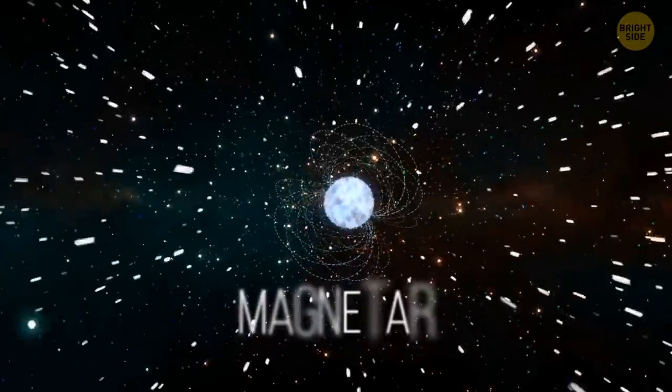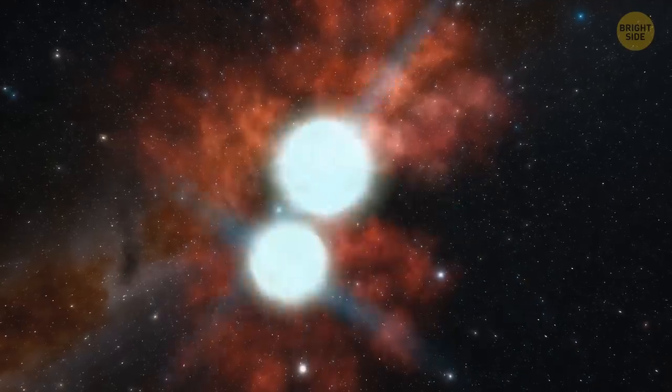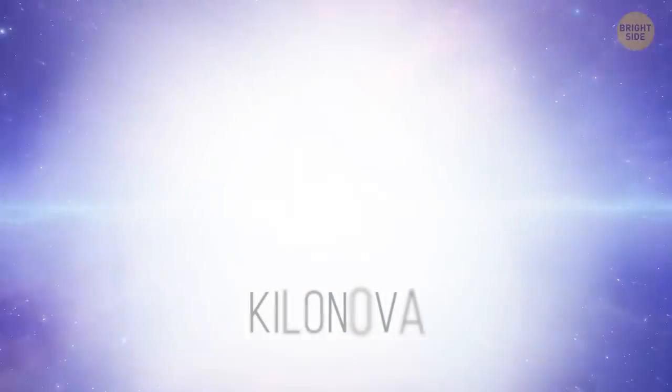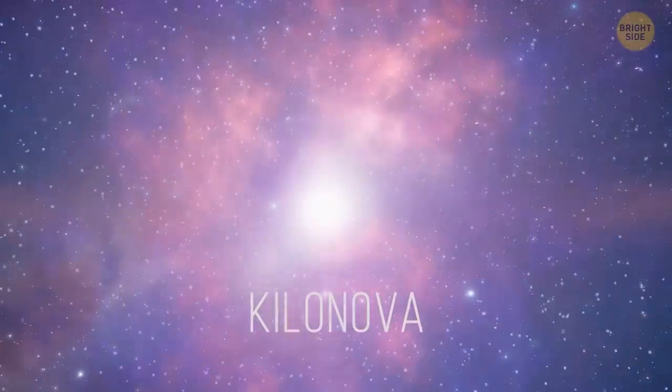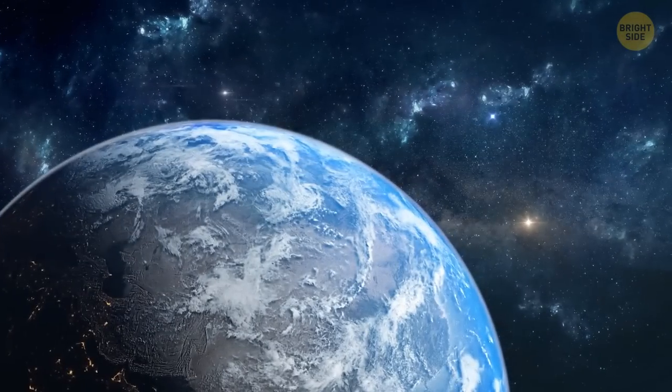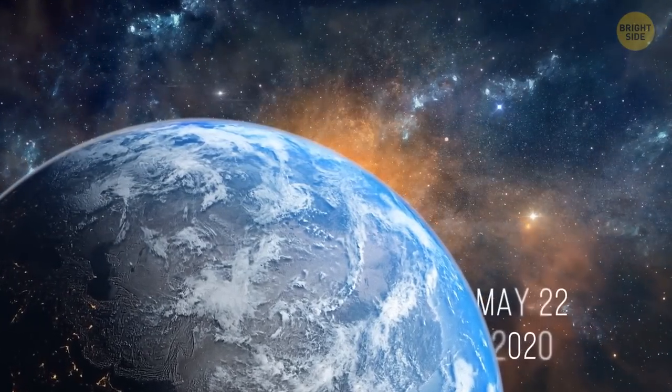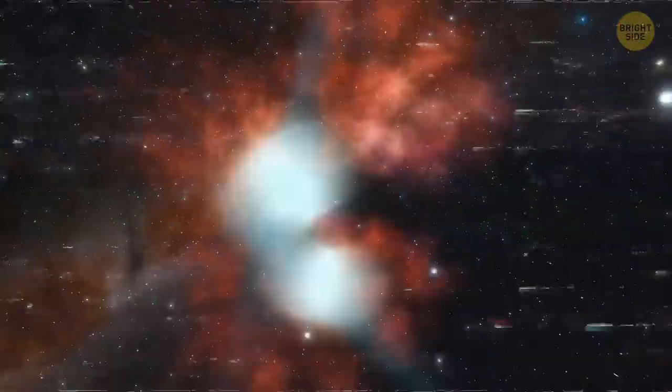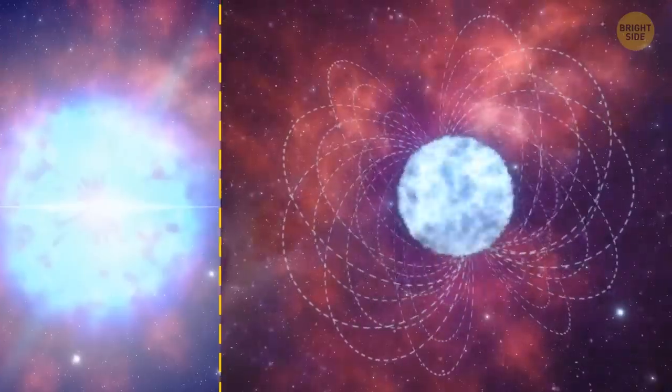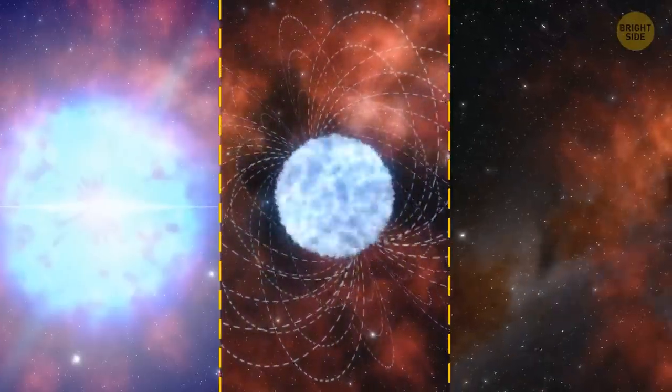This magnetar was likely formed after two neutron stars had merged. It resulted in a kilonova, one of the brightest and largest stellar blasts. Its light finally reached our planet on May 22, 2020. But I'm getting ahead of myself. How about we first figure out what these novas, magnetars, and neutron stars are?